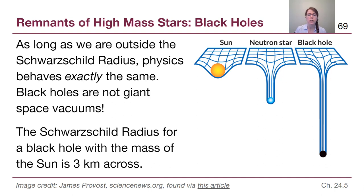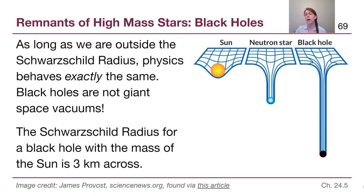For example, if a black hole had the exact same mass as the Sun, it would be about three kilometers across. As long as we're outside of that three kilometer area, physics behaves as normal.